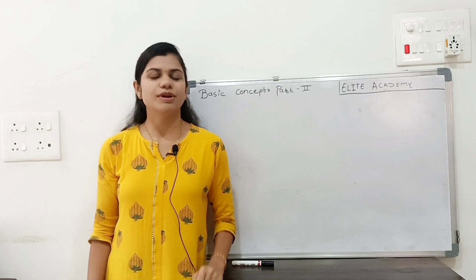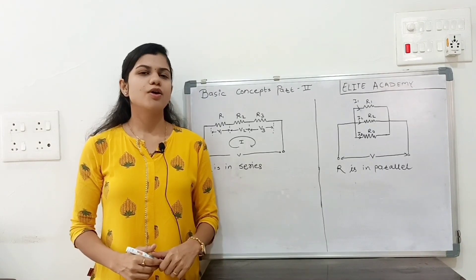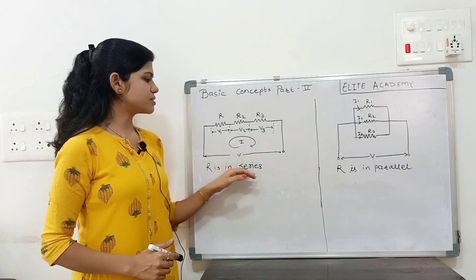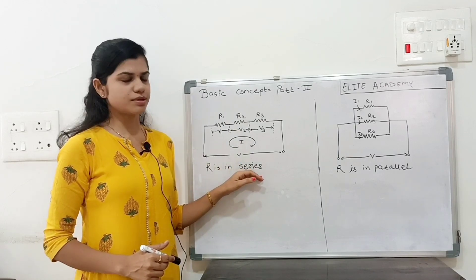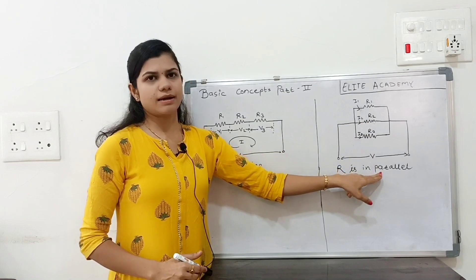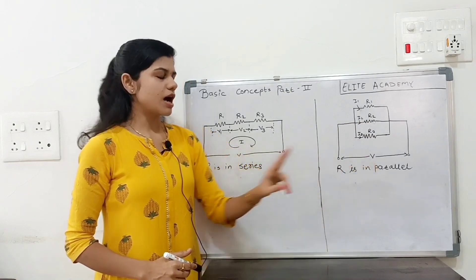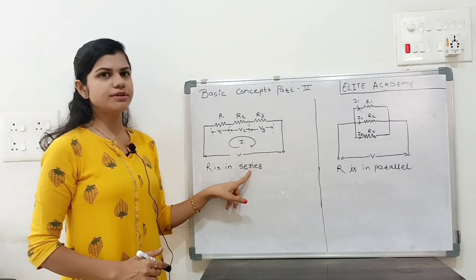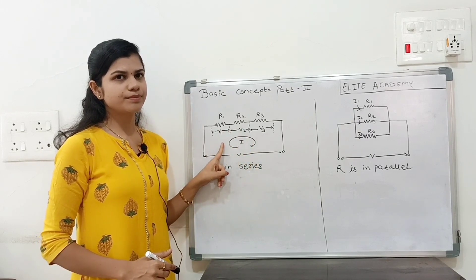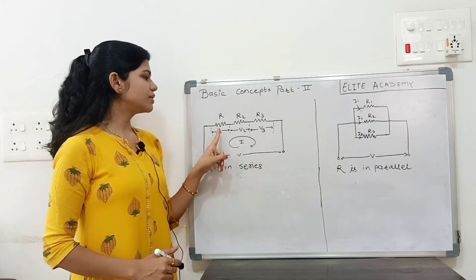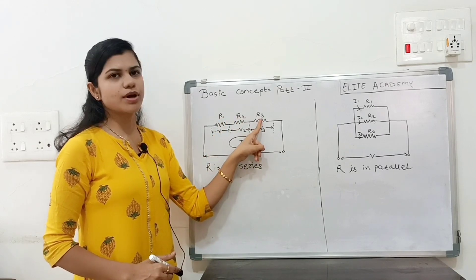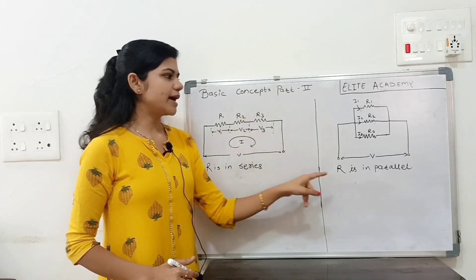Let's start with the video. Observe these two diagrams. In the first case, the resistances are connected in series. Always remember: in a series condition, the current remains the same throughout the circuit, but the voltage gets divided across the resistances R1, R2, R3.